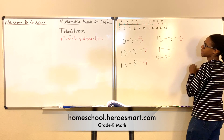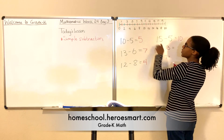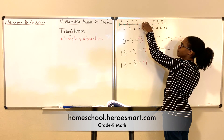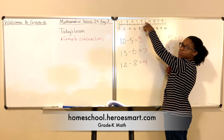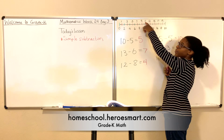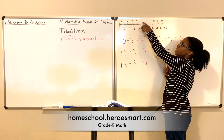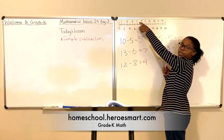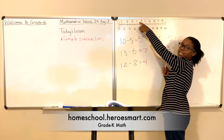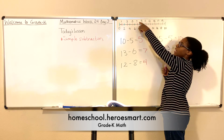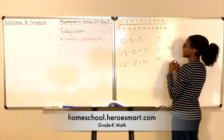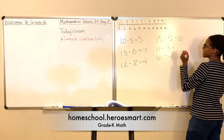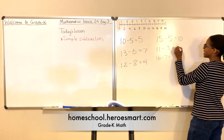11 minus 3. Let's find 11 on the number line. There you are. Now we're going to subtract 3: 1, 2, 3. What number does this land on? It lands on the number 8. Good job. It lands on 8.